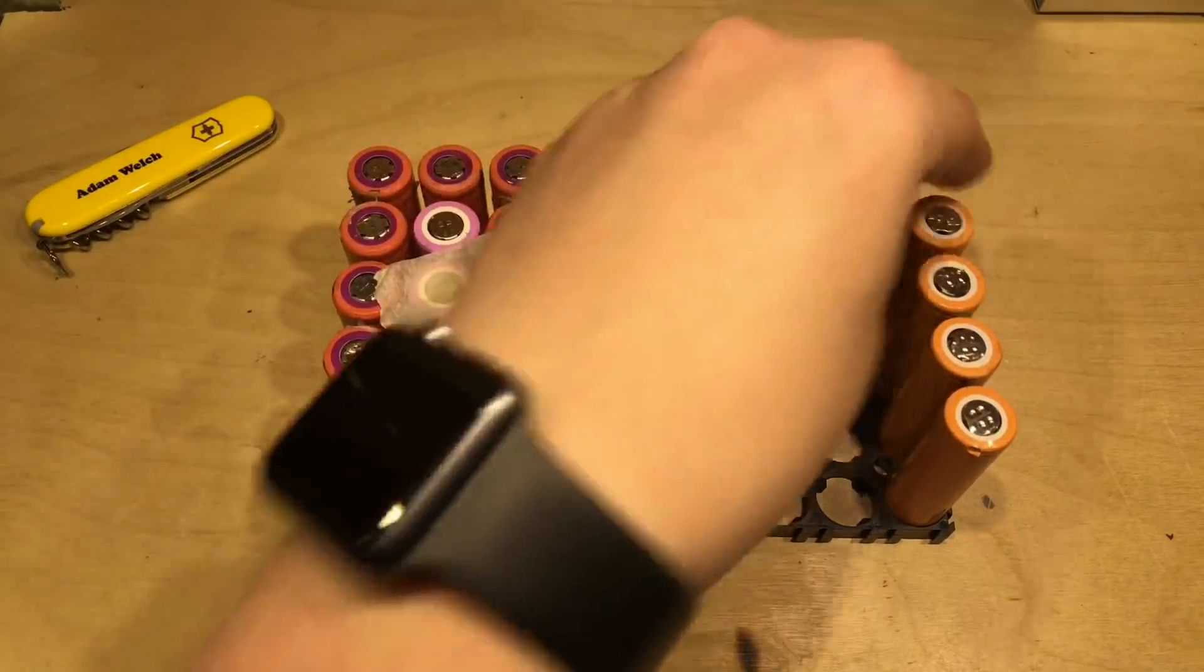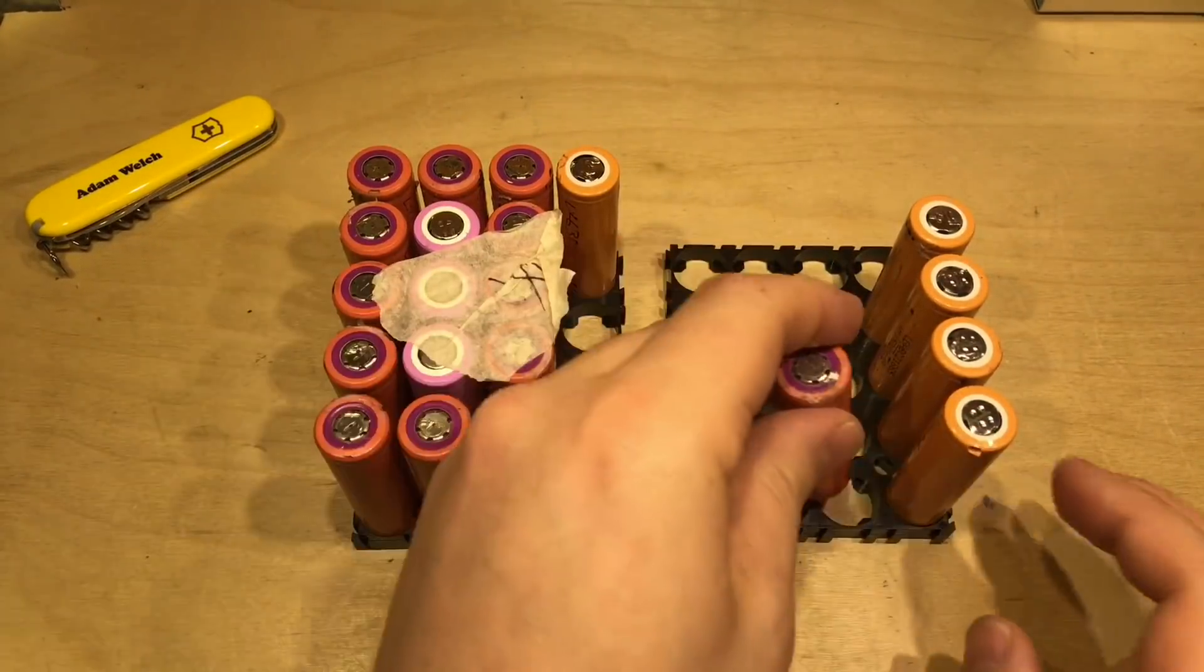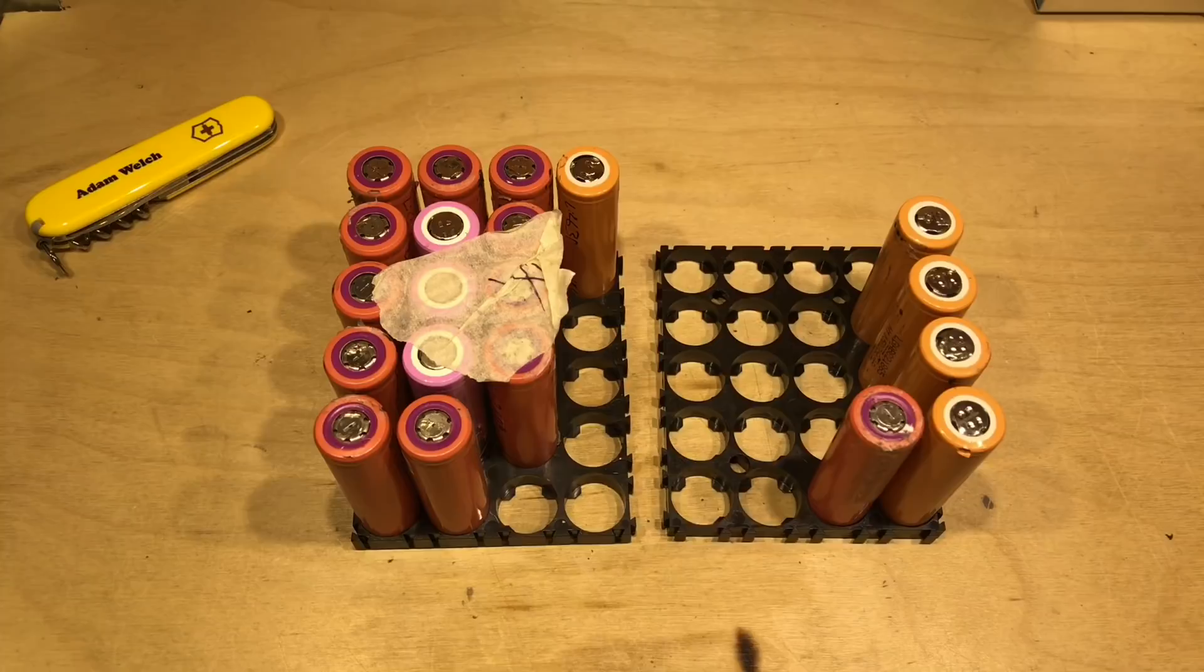Some will be easier than others. These seem a bit wider, those darker orange Sanyo cells. Anyway, I'll move them all across.